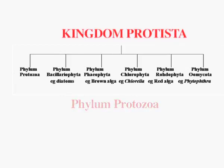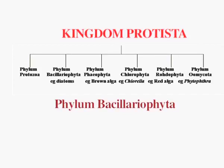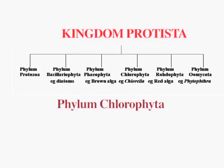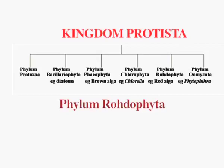Kingdom Protista includes six phyla: Phylum Protozoa; Phylum Bacillariophyta, which includes all the diatoms; Phylum Phaeophyta, which includes the brown algae; Phylum Chlorophyta, which includes Chlorella; Phylum Rhodophyta, which includes red algae; and Phylum Oomycota, which includes Phytophthora.